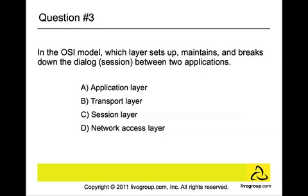Question number three: In the OSI model, which layer sets up, maintains, and breaks down the dialogue session between two applications? The answer is the session layer. The session layer provides the mechanism for opening, closing, and managing a session between end user application processes. Communication sessions consist of requests and responses that occur between applications — think of it like a telephone call. The session layer responds to service requests from the presentation layer and issues service requests to the transport layer.